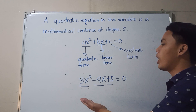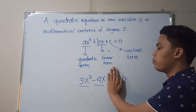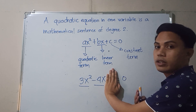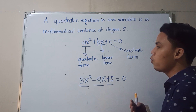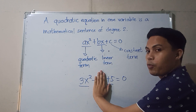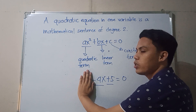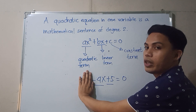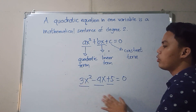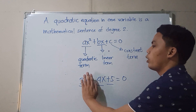The question is: if some terms are removed, can we still consider it a quadratic equation? For example, if the constant term or 5 is removed, the answer is yes. If the linear term is 0 or there is no linear term, we can still consider it a quadratic equation. But if the quadratic term is removed or equal to 0, then we cannot consider it a quadratic equation anymore — because by definition, the highest degree should be equal to 2. The quadratic term cannot be removed.